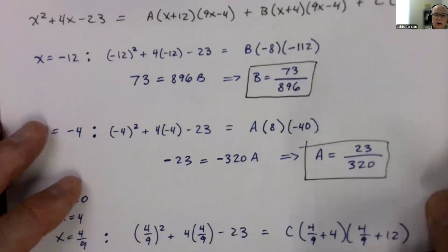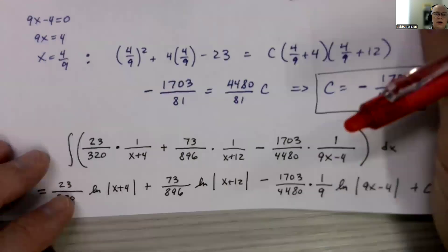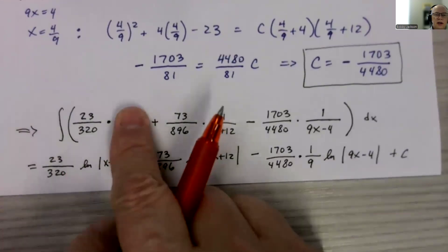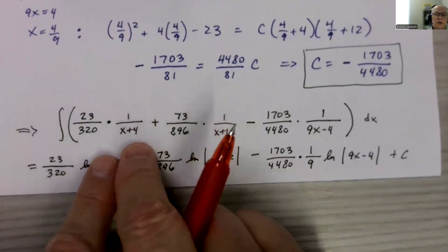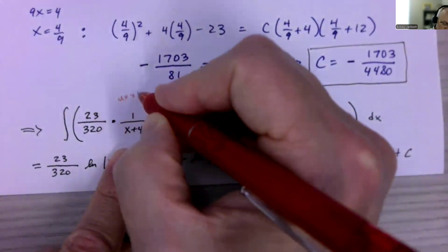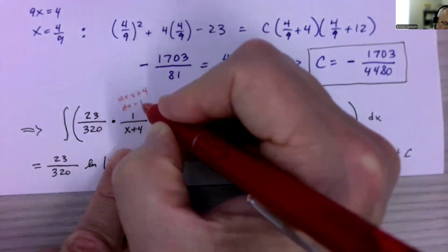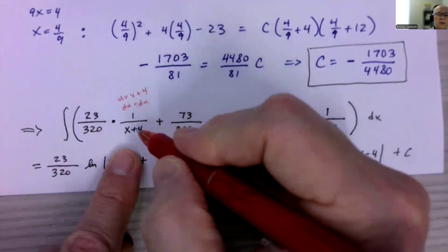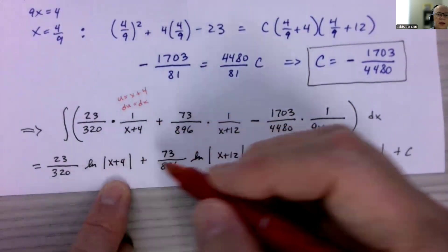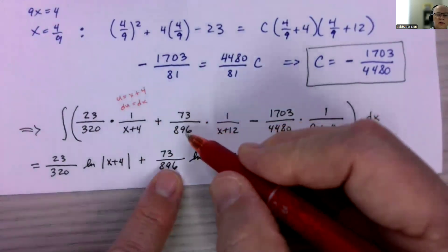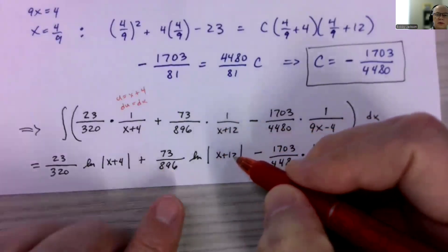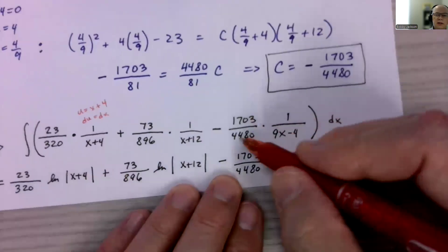Now, how much calculus have we done? Zero. Right now we do calculus. What's the antiderivative for this first term? Well, we've got a constant multiple. Pull that out. And the antiderivative of 1 over x plus 4, if I let u be x plus 4, then my du is just dx, and I get 1 over u du, which is natural log absolute value of u, where u is x plus 4. Similarly, over here, I get 73 over 896. The antiderivative of this will be the natural log of absolute value of x plus 12, very similar to what I did over there.